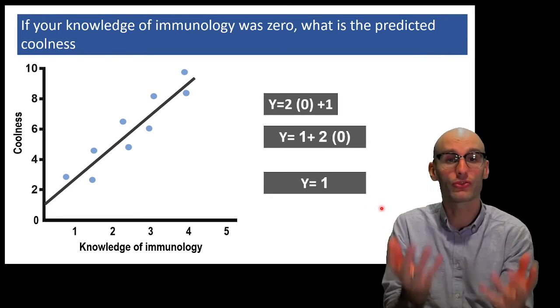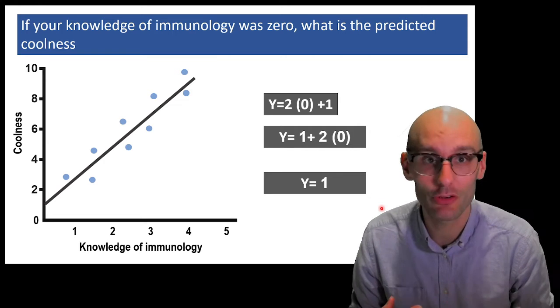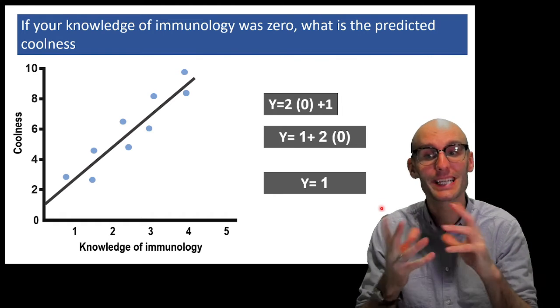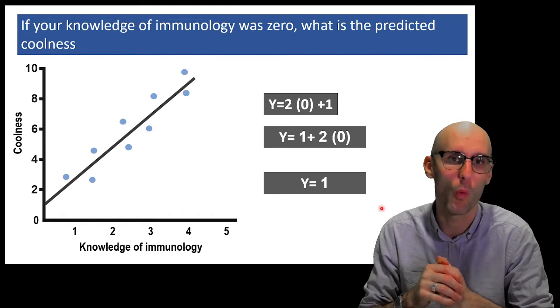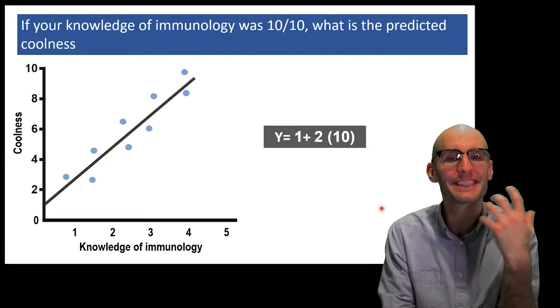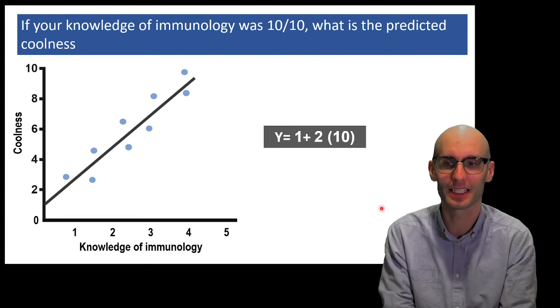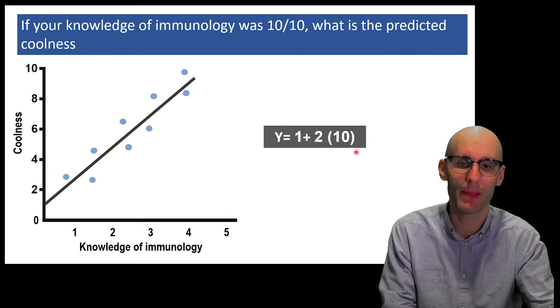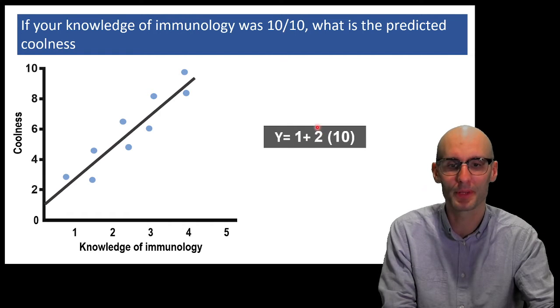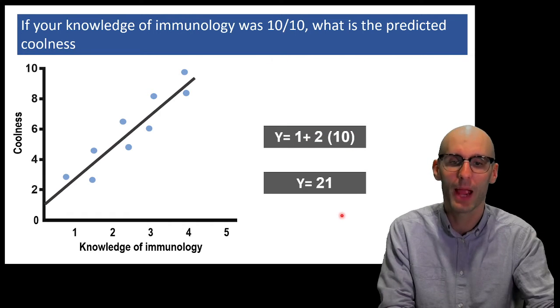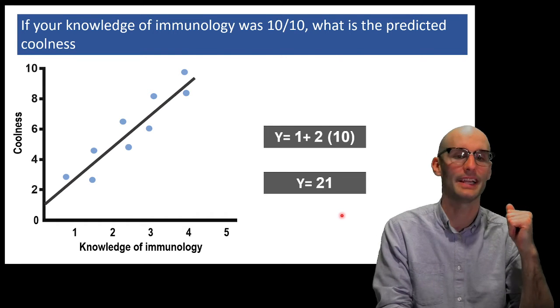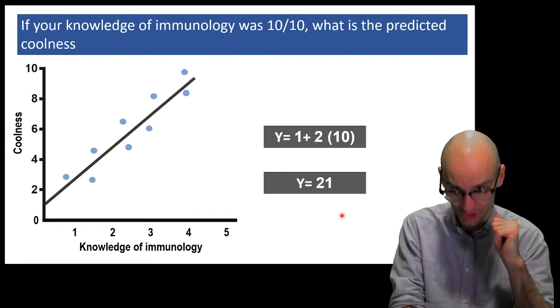I've now filled in the letters with the numbers that actually describe the line there. So it's y equals 2x plus 1 or y equals 1 plus 2x. So it's the same thing. This is just how a statistician would write it. So now when we plug in the 0 into the formula, we get the coolness rating of 1. So this is now, if you were to come across a new person that has 0 knowledge of immunology, you should pity them. And you should also know that their predicted coolness is 1 out of 10.